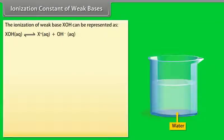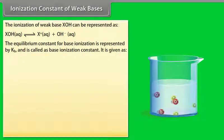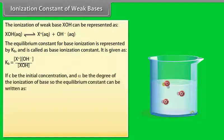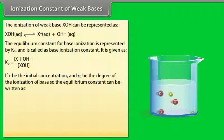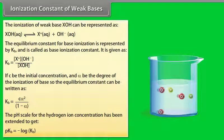Ionization constant of weak bases: The ionization of weak base XOH can be represented by an equation. The equilibrium constant for base ionization is represented by Kb and is called the base ionization constant. If C is the initial concentration and alpha is the degree of ionization, then Kb = Cα² / (1−α).